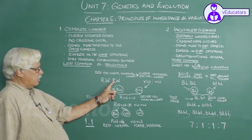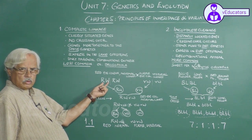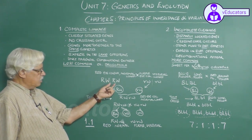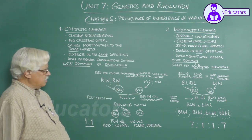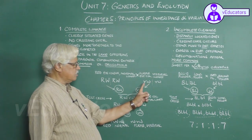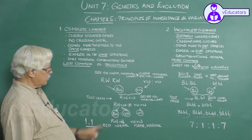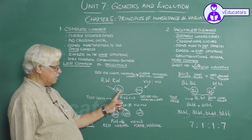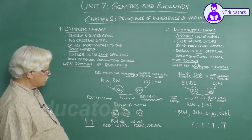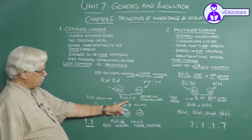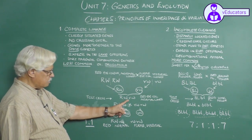So R and W are on one chromosome, and the homologous chromosome carries small r and small w. The gametes from the first parent are capital R, capital W, and from the second parent, small r, small w. When crossed, the resulting genotype is capital R capital W / small r small w.